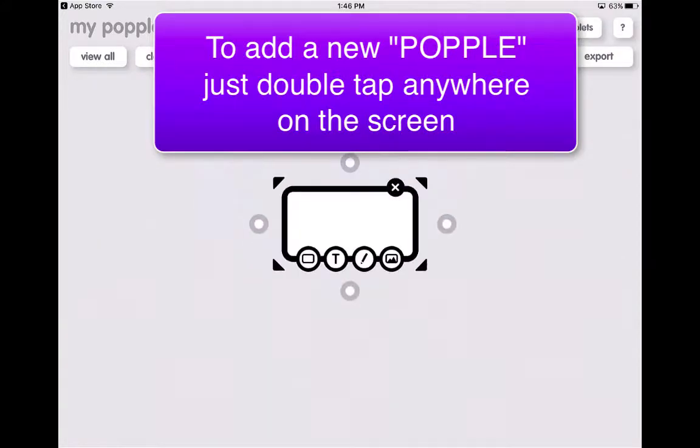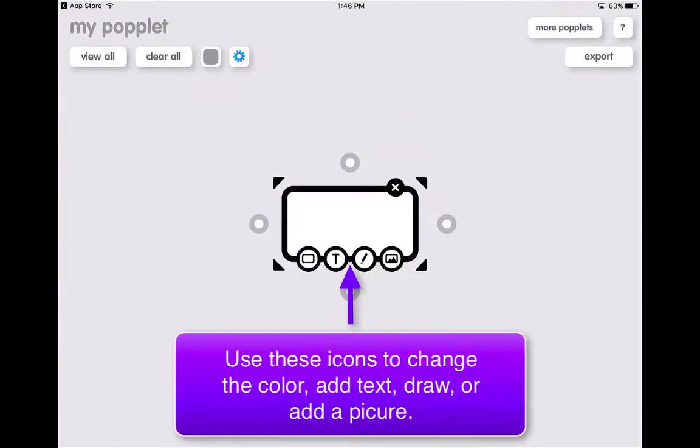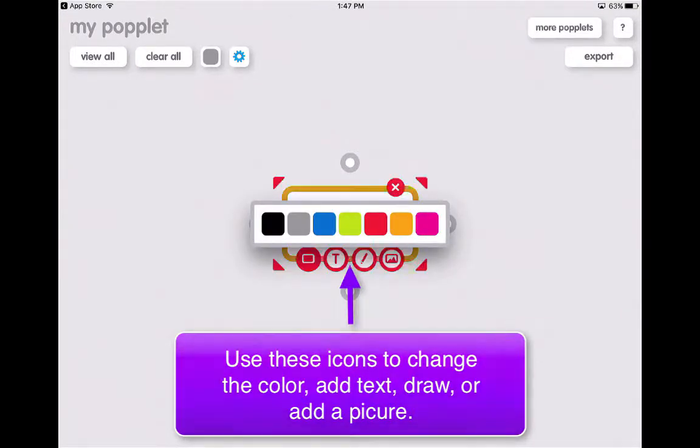So after you choose a color, you simply just double tap. You can insert text. You can insert a drawing, and you can insert a photo. You can change the color of the popple, which is part of the experience.